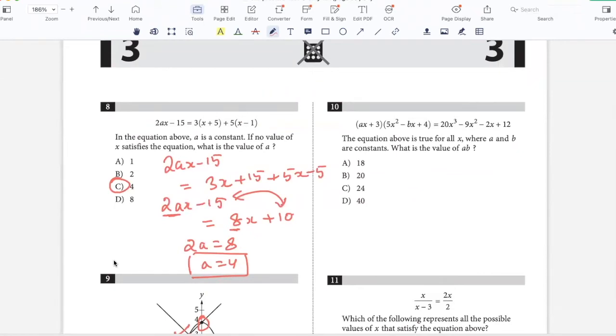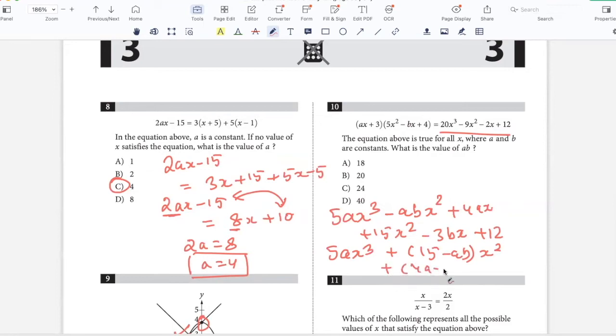The equation above is true for all X, where A and B are constants. What is the value of AB? If we open this up, we get 5A X cubed minus AB X squared plus 4A X plus 15 X squared minus 3B X plus 12 equals the right hand side. I need AB, so I can use the coefficients of X squared on both sides. 15 minus AB should be negative 9, so AB should be 15 plus 9, which is 24. That's C.